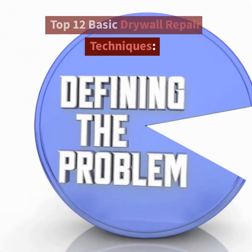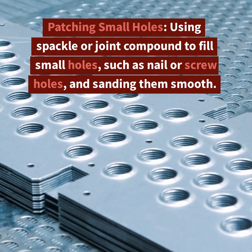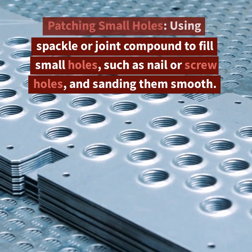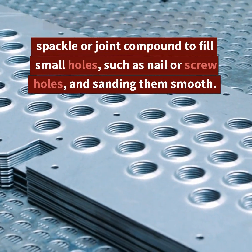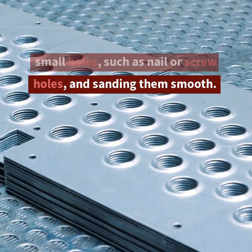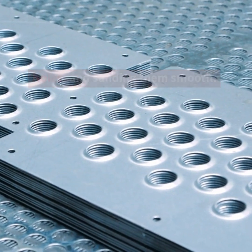Top 12 Basic Drywall Repair Techniques. 1. Patching Small Holes: Using spackle or joint compound to fill small holes, such as nail or screw holes, and sanding them smooth.